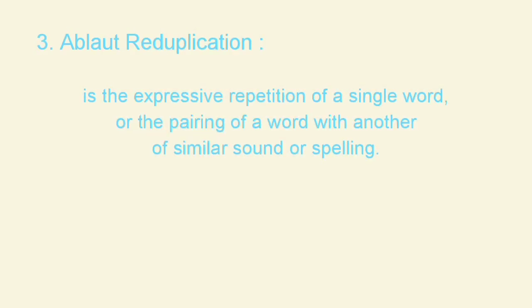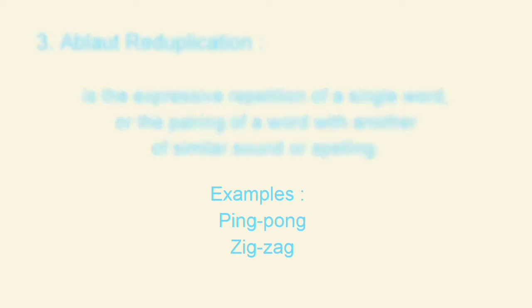The third type is ablaut reduplication. Ablaut reduplication is the expressive repetition of a single word, or the pairing of a word with another of similar sound or spelling. For example, like ping-pong and zigzag.